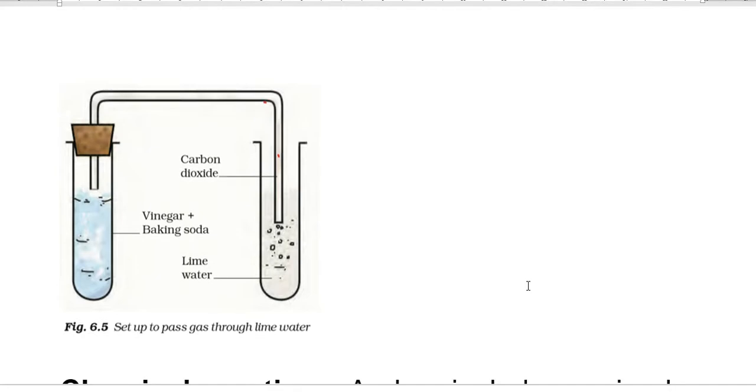The next chemical change is when we mix vinegar and baking soda in a test tube. When we add baking soda powder, bubbles and carbon dioxide gas are formed. This carbon dioxide is a new substance.